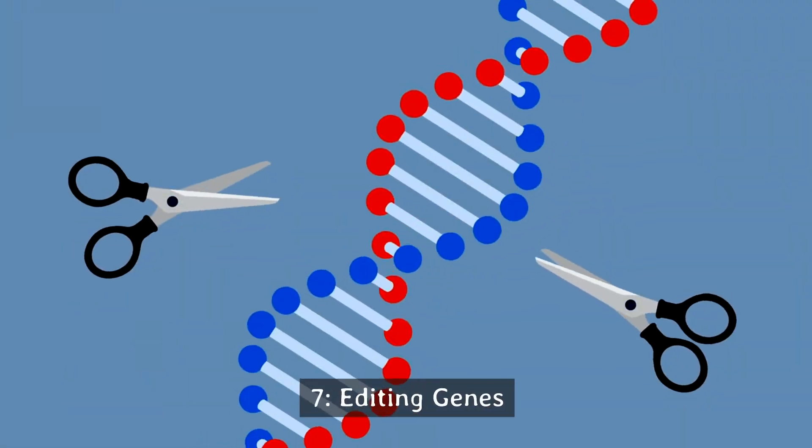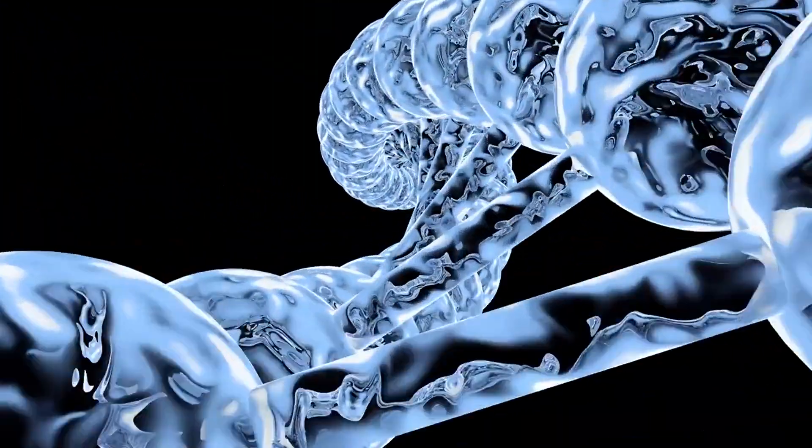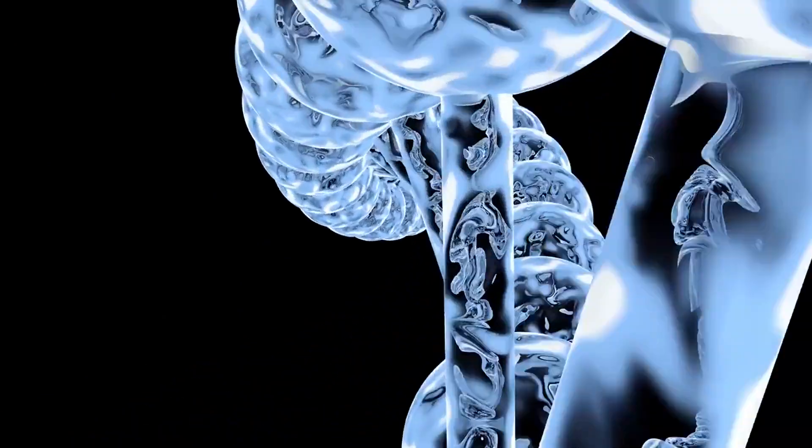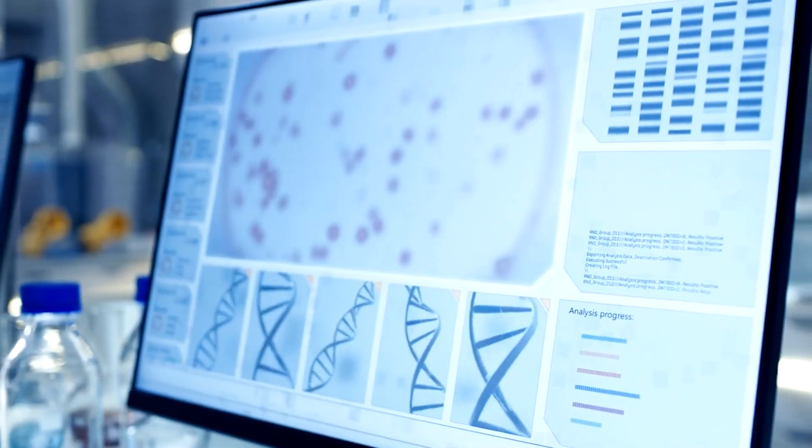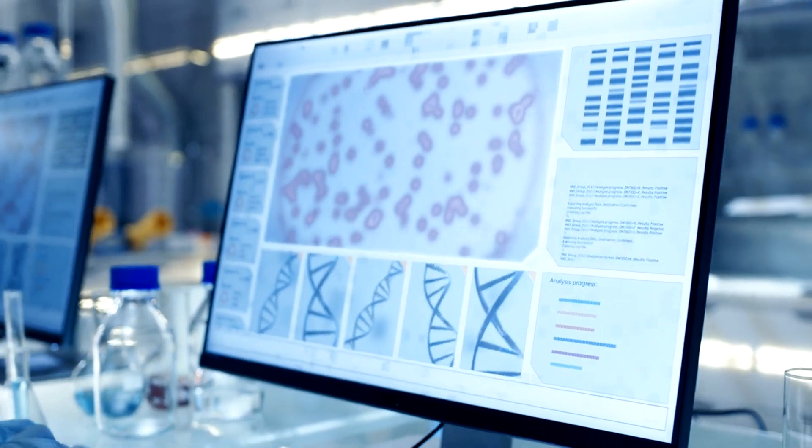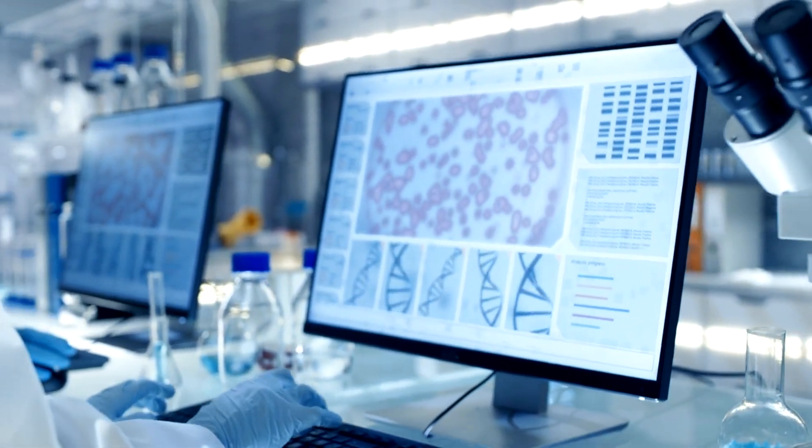Number 7: Editing Genes. Ever since the double helix structure of DNA was revealed in the early 1950s, scientists have hypothesized about the possibility of artificially modifying DNA to change the functions of an organism.